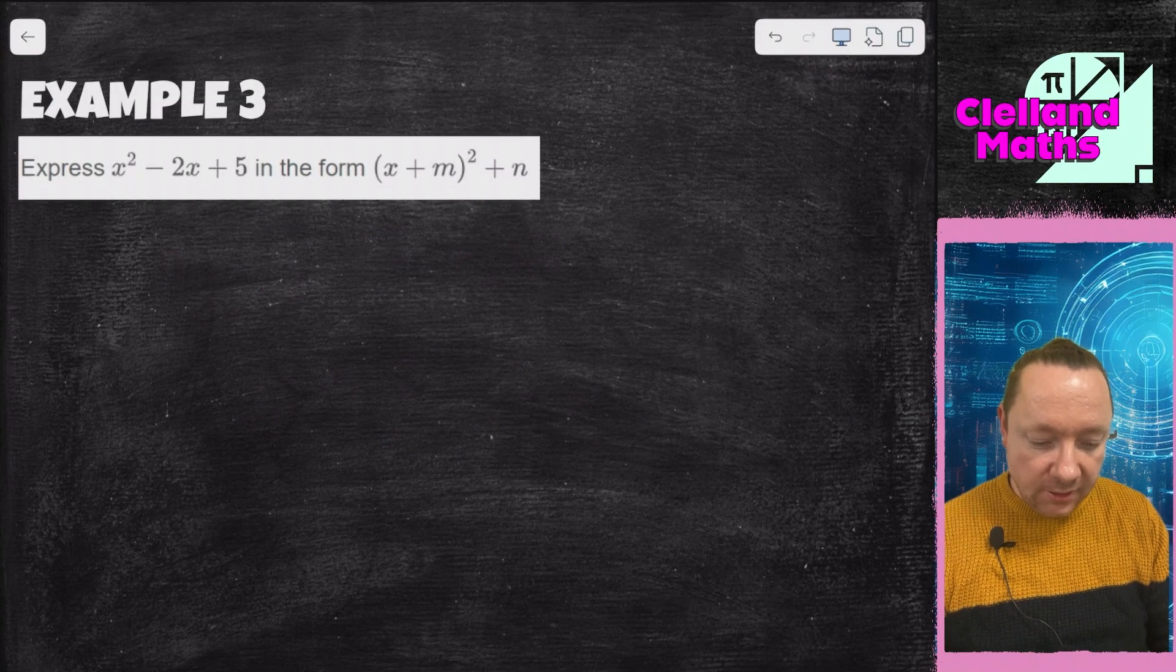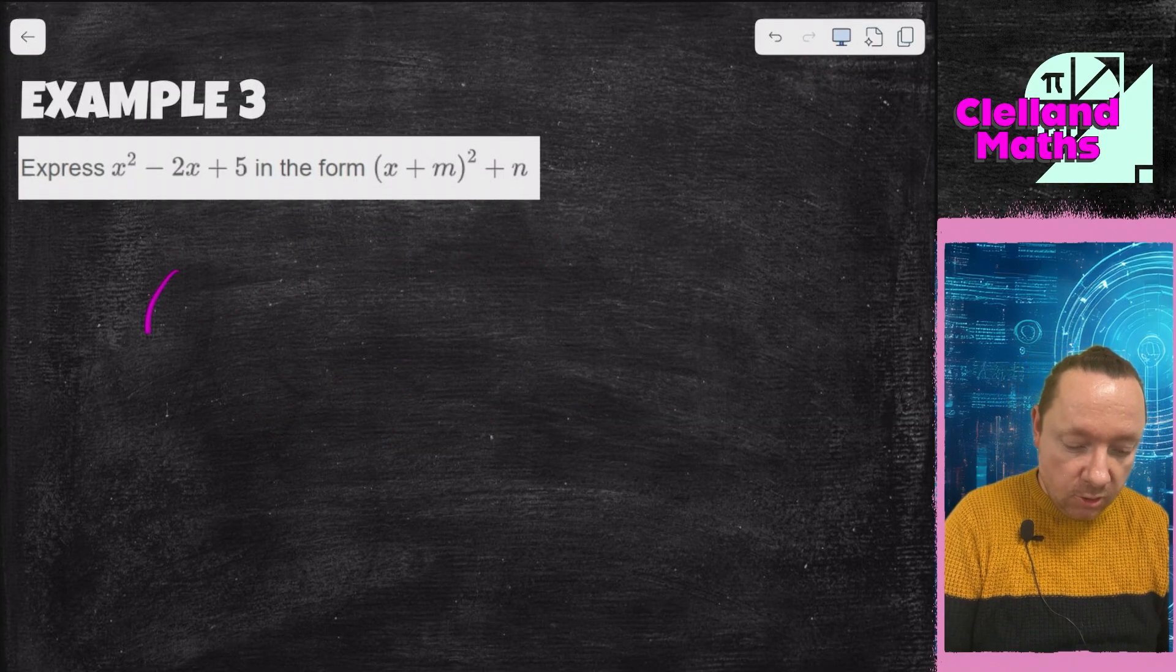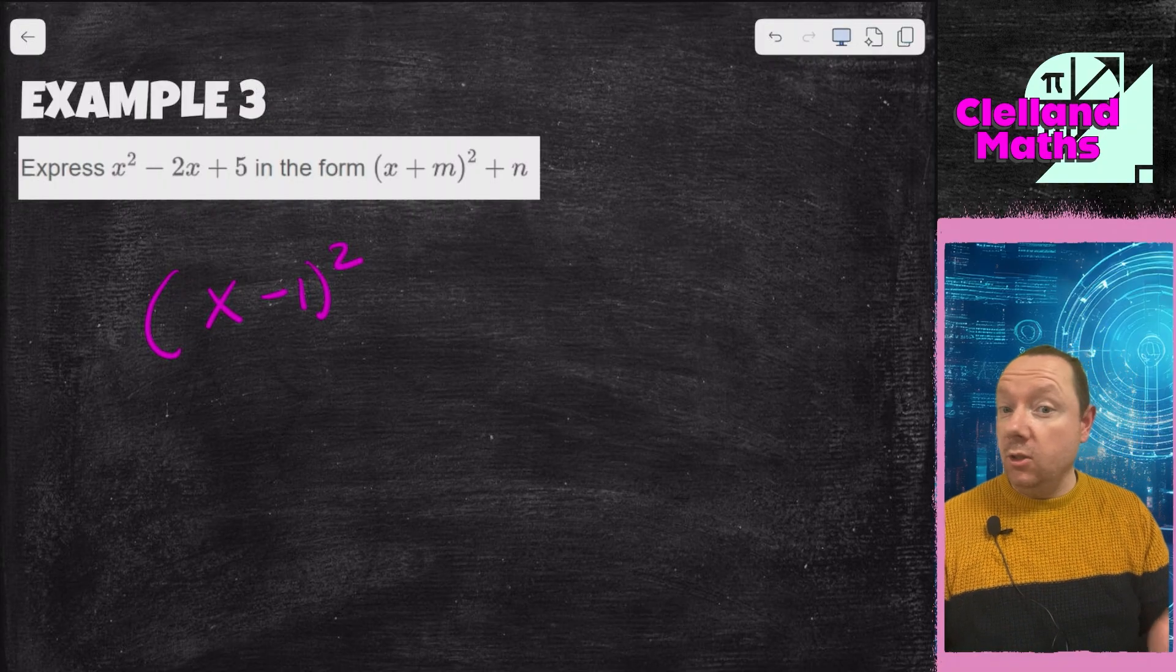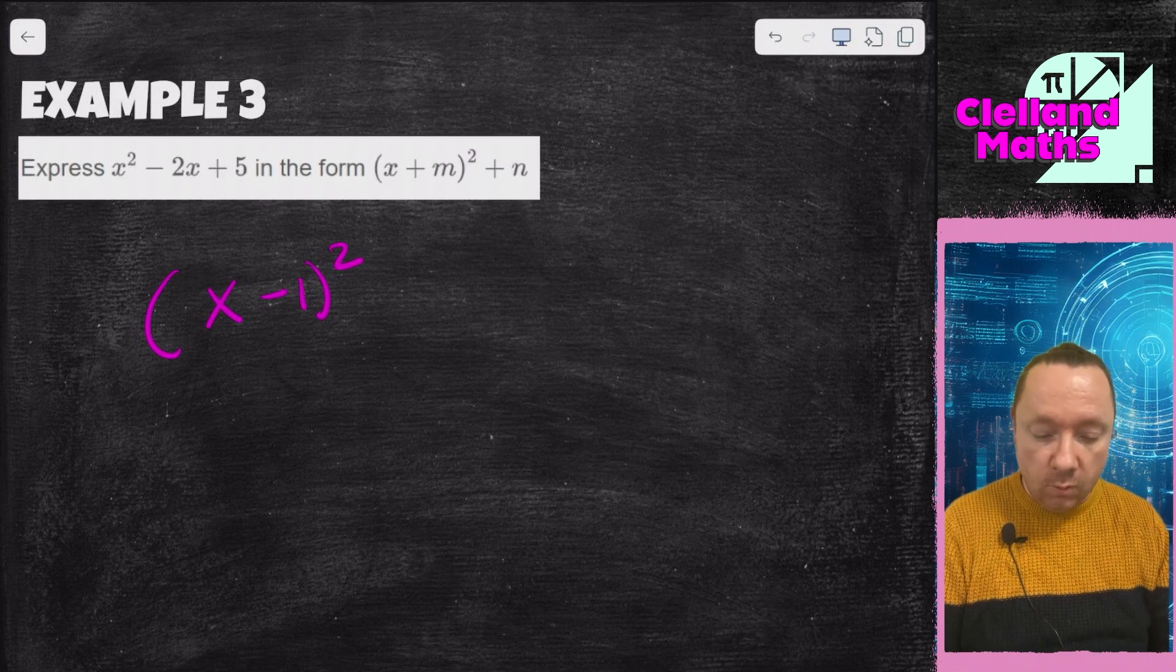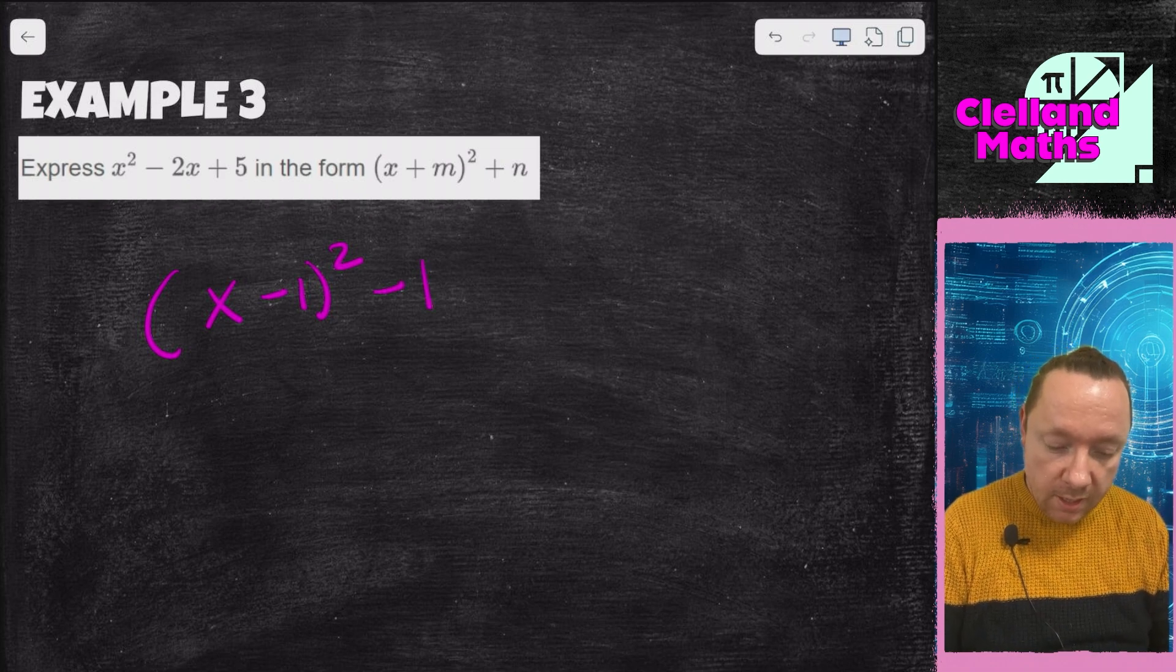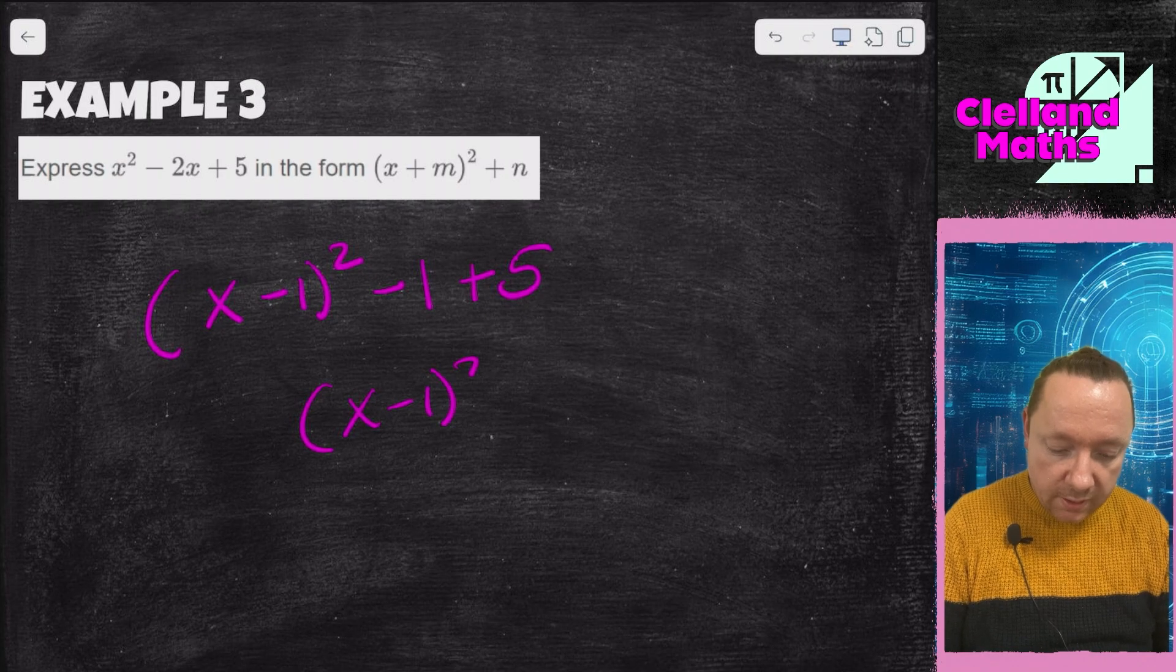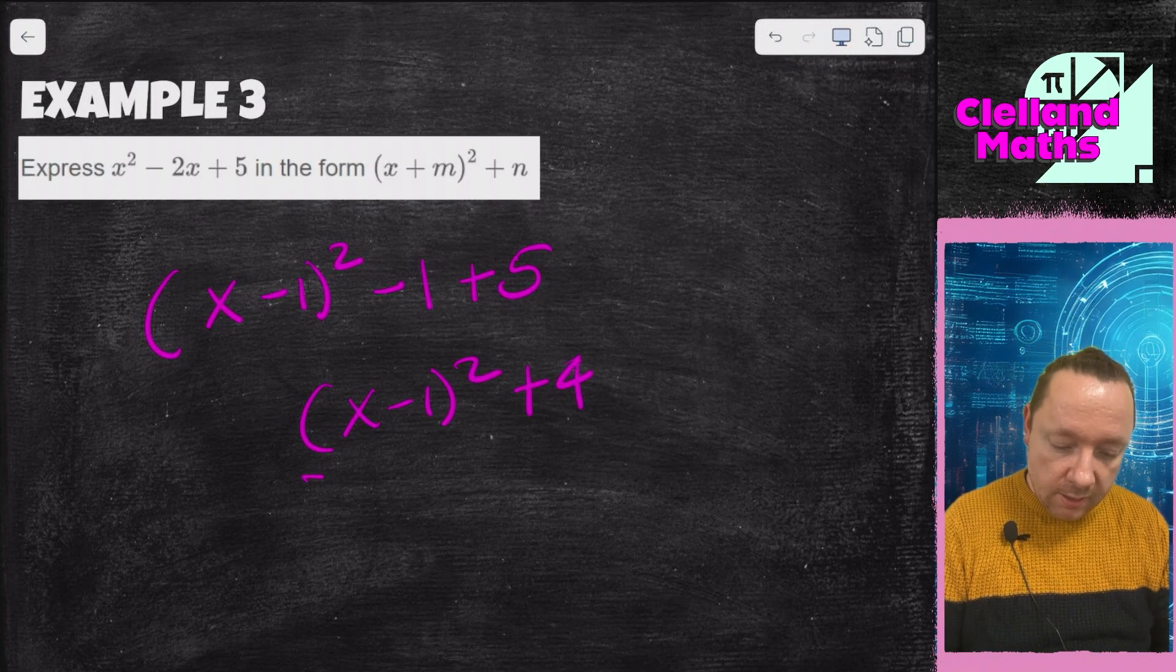Example 3, x squared minus 2x plus 5. Don't be worried about that minus 2x. We're just going to do x take away 1 all squared. Now when you do 1 squared you get 1, when you do minus 1 squared you also get 1. You just do the number squared. 1 squared is 1, so I'm going to take away 1. I've still got plus 5 on the end. So that's x minus 1 all squared, 5 minus 1 is 4, so I've got plus 4. And we're done there.